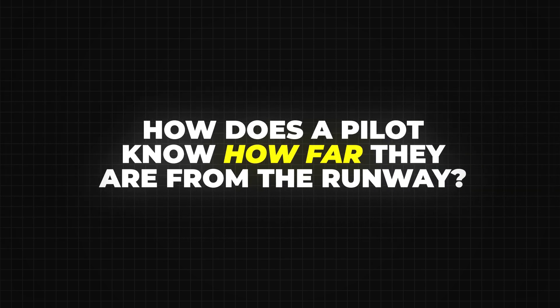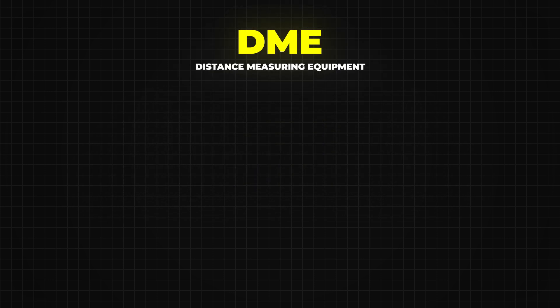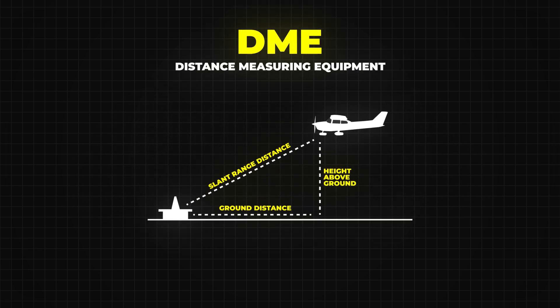Now, how does a pilot know how far they are from the runway? That's where DME, or distance measuring equipment, comes in. Some ILS systems include a DME signal, which shows the distance to the runway in nautical miles. If you see the letter D in front of the ILS identifier code, it means DME is included.